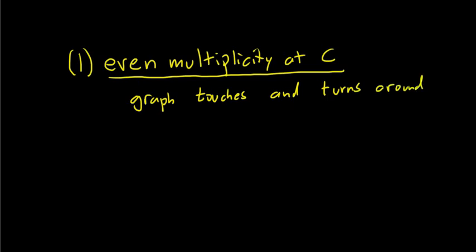So the graph touches and turns around at C, so at your zero. So what would that mean graphically? Say you had a zero of two, and the graph was doing this. It would just touch and turn around. So touch and turn around.